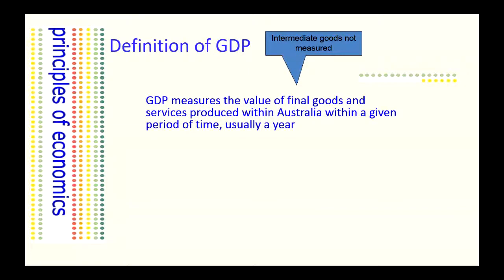It's also the value of final goods and services. Of course, lots of goods and services are produced within the country. Some of those goods we call intermediate goods — in other words, they are contained within the final goods. For instance, bread contains another good, which is wheat. And so if we were to value both the wheat and the bread, we'd be guilty of double counting.